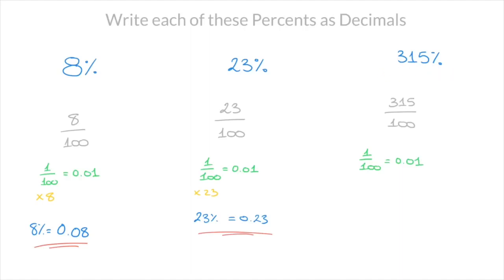315% or 315 hundredths is equal to 0.01 times 315. And multiplying 0.01 by 315 leads to 315% equals 3.15. And that's the answer.